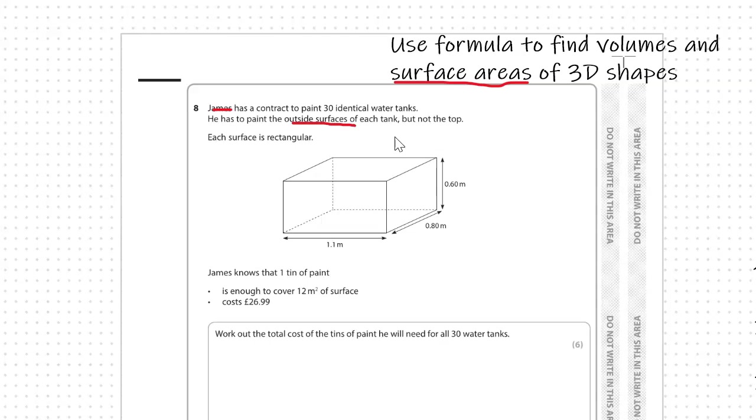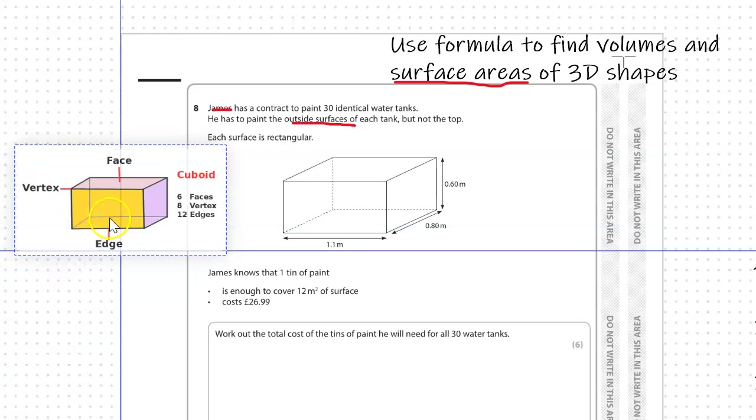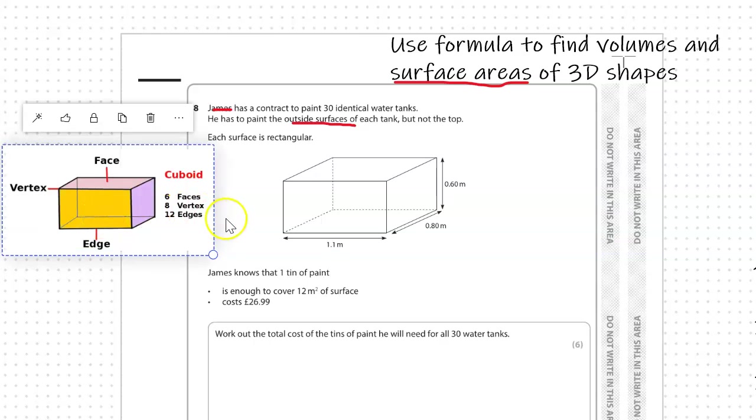A bit of pre-knowledge that you need: surface area of a cuboid. A cuboid has six faces, so front, back, two sides, and top and bottom. Obviously with this one they're saying not the top, so we need five sides.